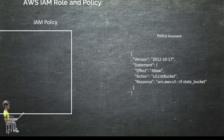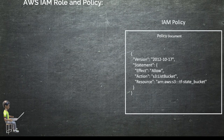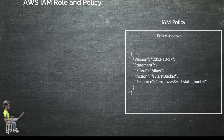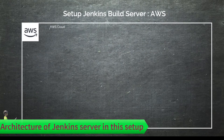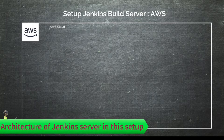Here is a simple example of a policy document which allows S3 list bucket, but for the Jenkins server build we have a separate policy document, which I will get to. We create a role and assign that policy to that role. Here is the architecture we are going to implement using Terraform.